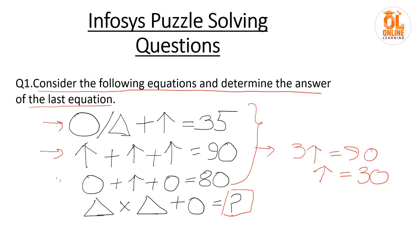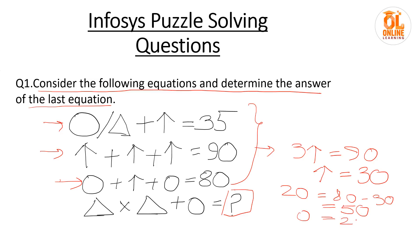Now if you see here, you have in this line two circles and one arrow. You know the value of the arrow, so put it in. So two circles will be equal to 80 minus 30, which is equal to 50. So one circle will be equal to 25.